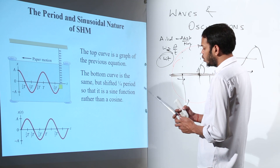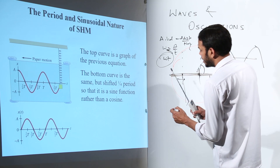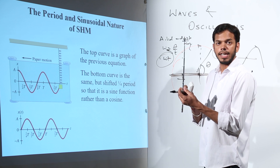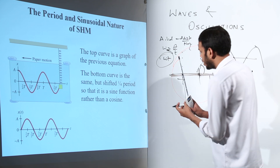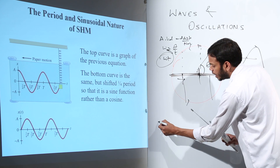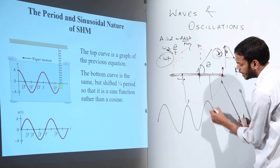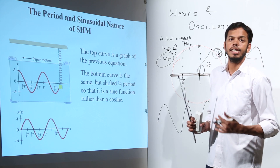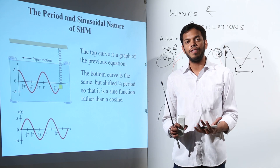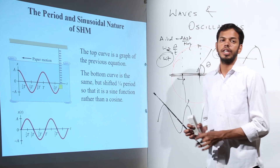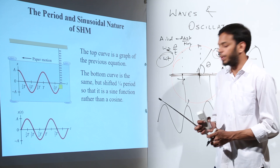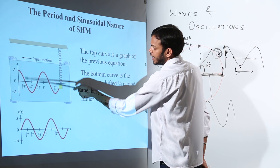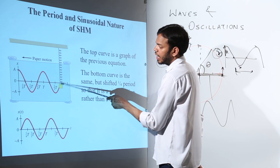The marker will do something like this because it is attached at the back side of this block. So it will undergo and draw this type of pattern, showing the graphical relationship between displacement and time. That is how we are going to get this graph.